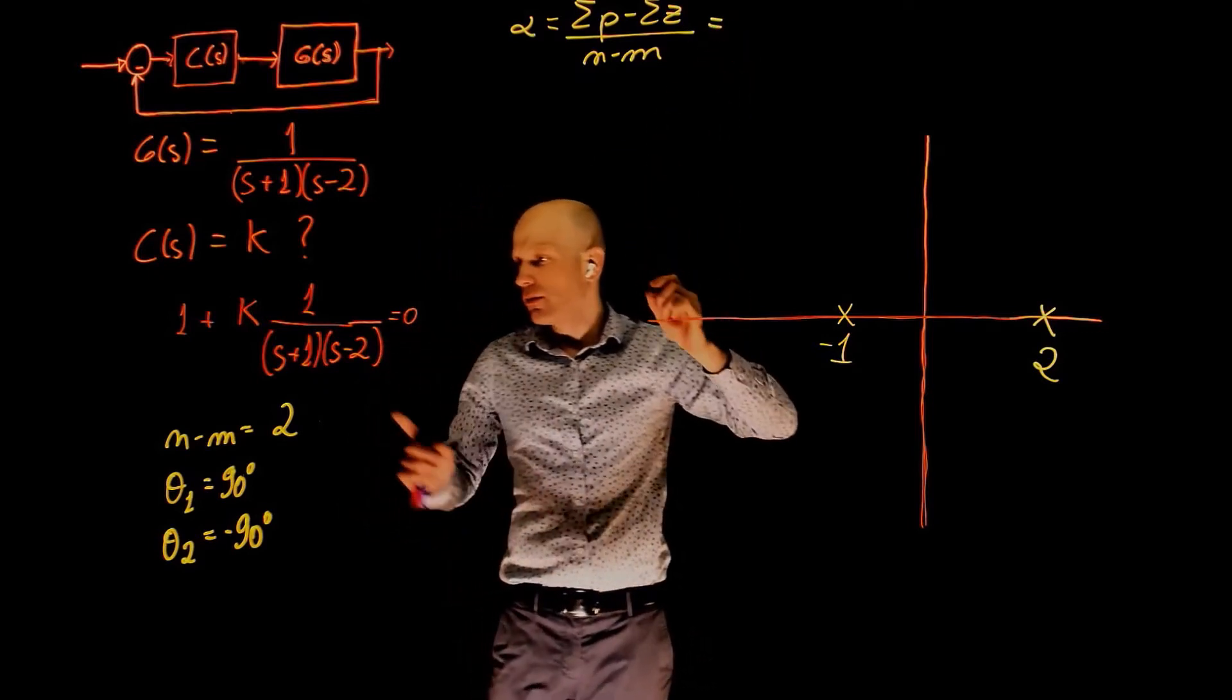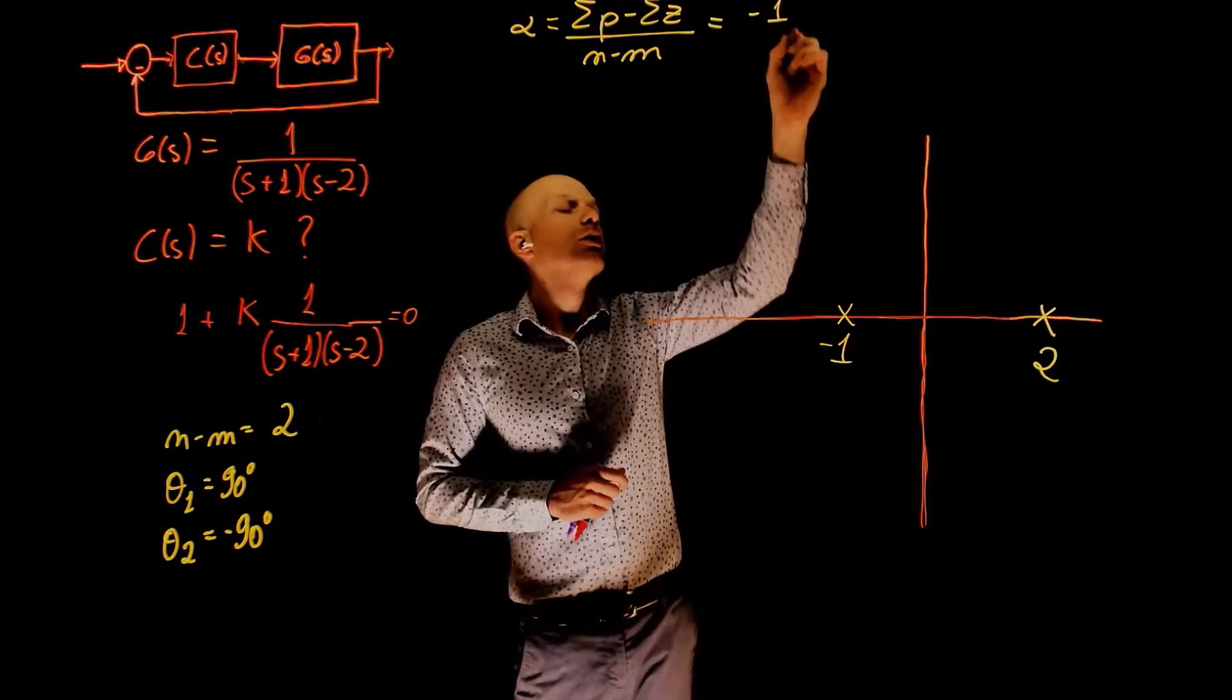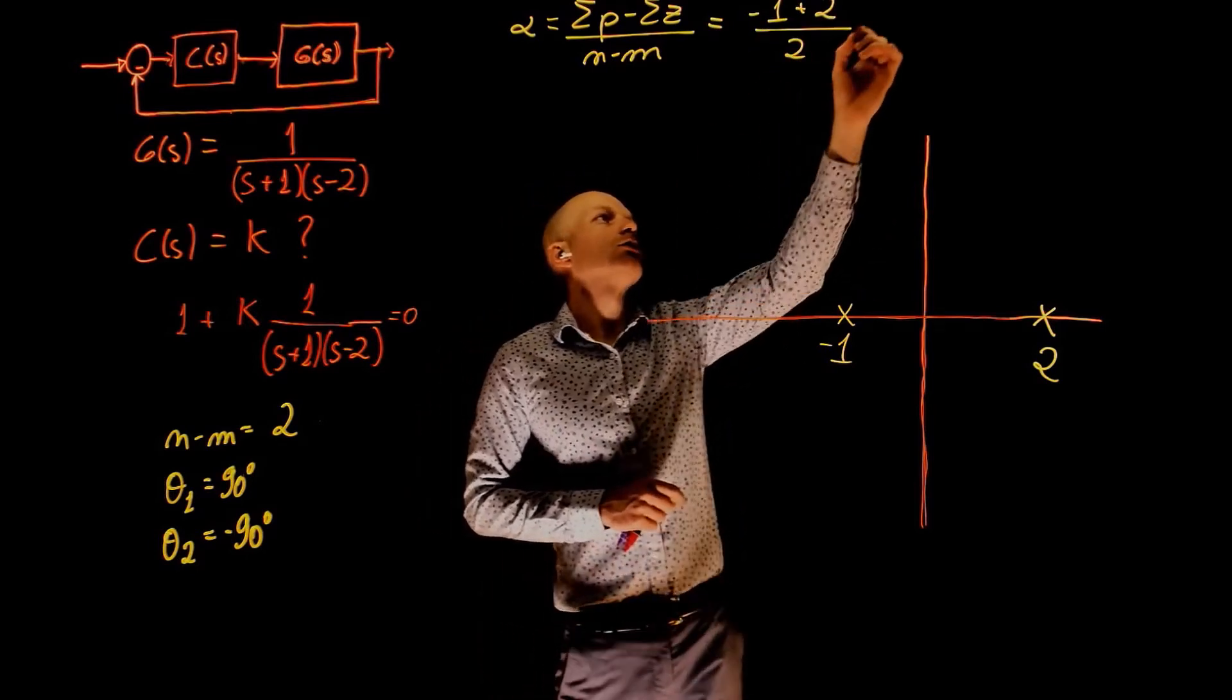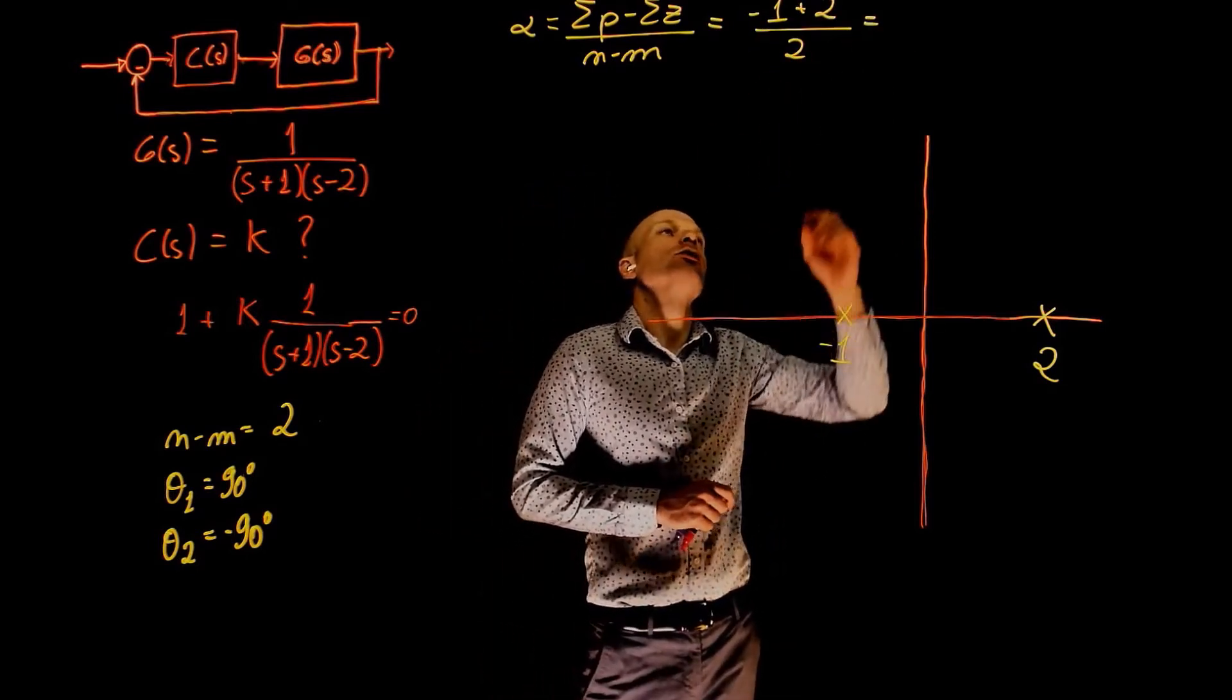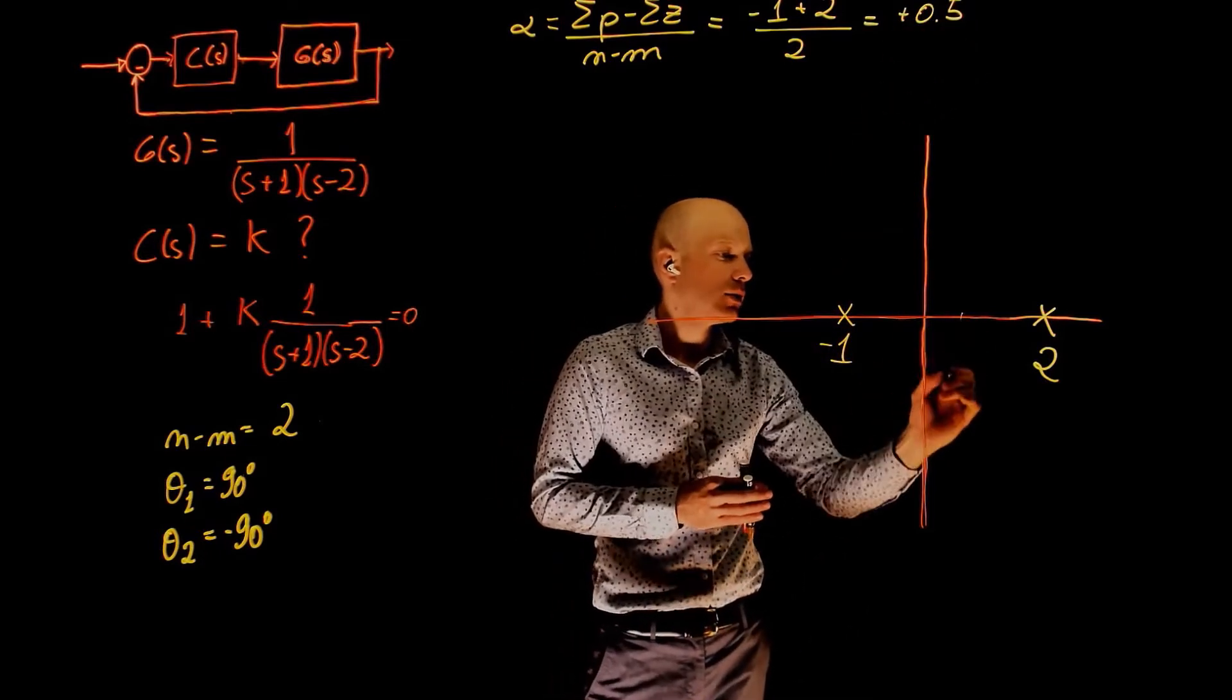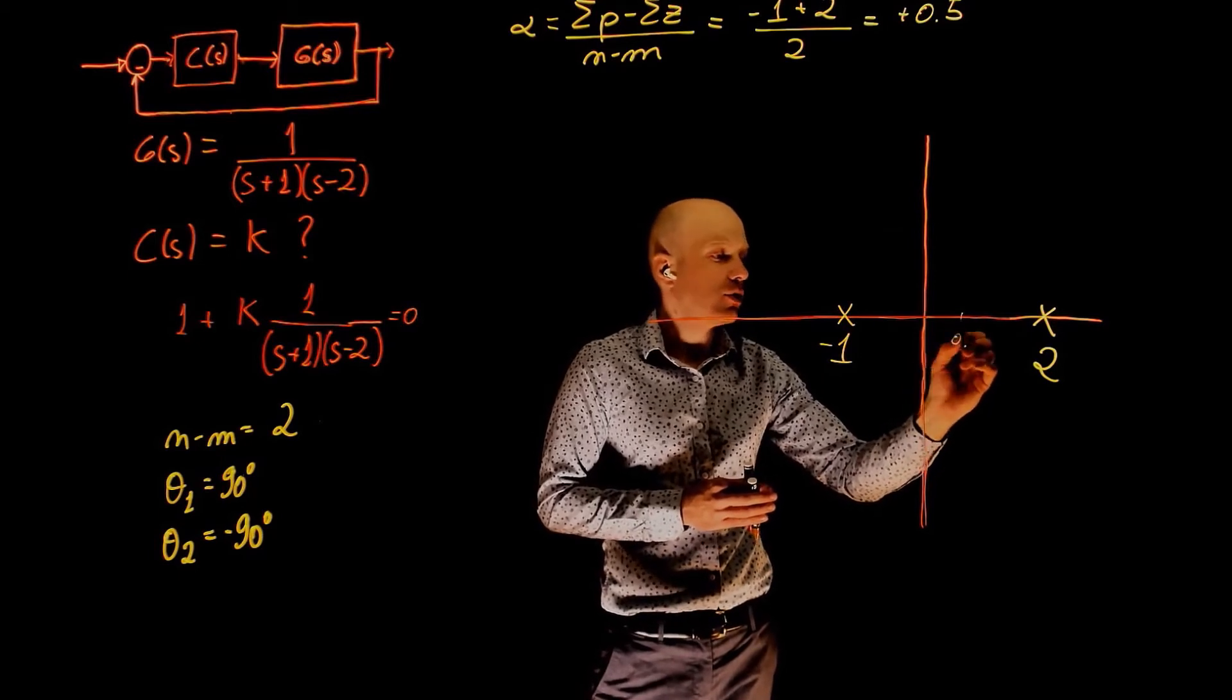This is sum of poles, negative 1 plus 2 divided by 2. This is equal to 1 over 2, that is positive 0.5. The asymptote has a centroid at positive 0.5.